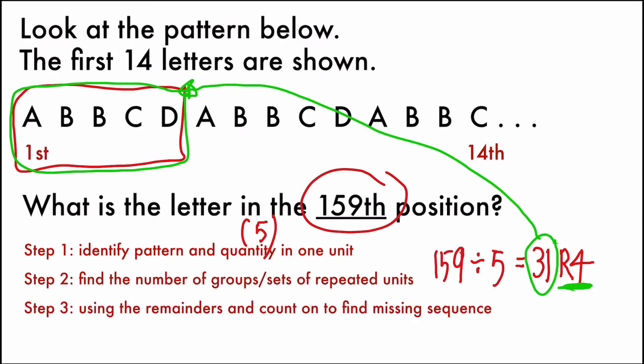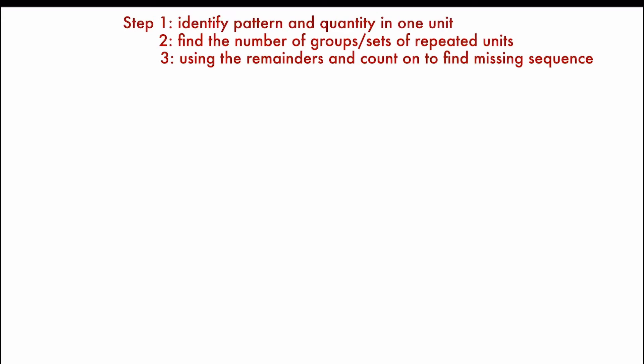So the last step, using the remainder to count on and find the missing sequence, which is the 159th position. So let's start. There are four in total. So we will go 1, 2, 3, and 4. This gives us the answer, letter C. The main idea to solve this pattern question is to use the remainder to count on. So the most important thing here, you have to find the remainder first, and then you count on to find the missing sequence. So step 1 and 2 helps you to find the remainder.